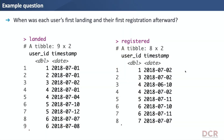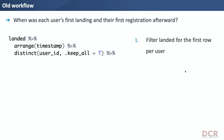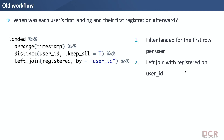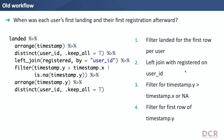Let's take a specific example: when was each user's first landing and then their first registration afterward? We have two simple tables — one for landings and one for registrations — with the user and the time. Currently your workflow might look like this: first filter to get the first landing per user, then left join with the registered table on user ID, but only keep registrations that happen after the landing, and finally filter for the first registration because we only want their first one afterward.